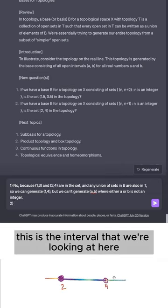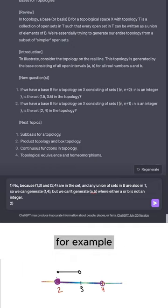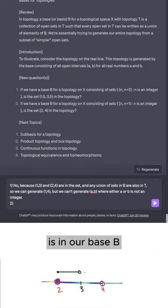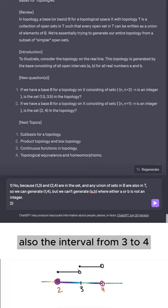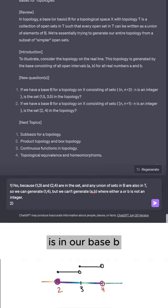So in this case, this is the interval that we're looking at here. Now in our base B, we only have intervals of length 1. For example, the interval from 2 to 3, inclusive of 2 and not inclusive of 3, is in our base B. Also, the interval from 3 to 4, inclusive of 3 and non-inclusive of 4, is in our base B.